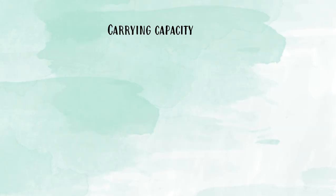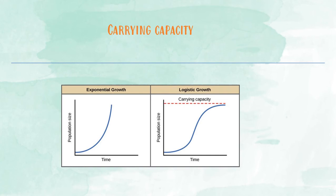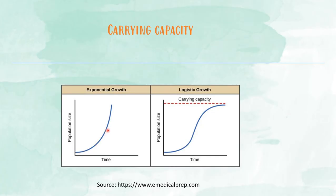Before a population reaches carrying capacity, it experiences a period of rapid growth called exponential population growth. During this period, there are abundant resources for organisms, so more are being born than are dying. Because resources such as food, shelter, and water are unlimited, exponential growth produces a J-shaped curve. When resources become limited and carrying capacity is reached, it exhibits logistic growth, which results in an S-shaped curve.